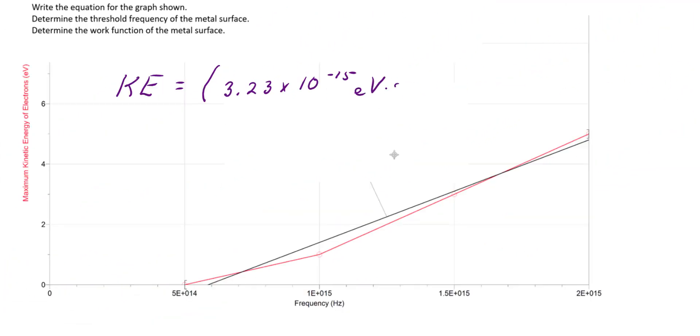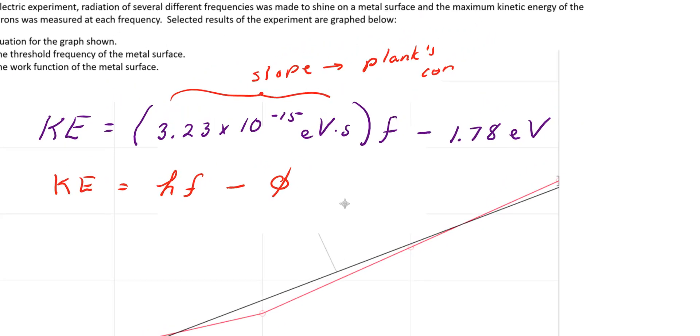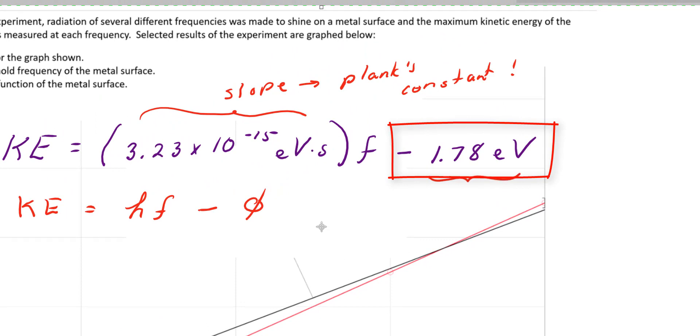Starting with a clean slate, the formula for this particular line for this particular lab is ke equals 3.23 times 10 to the negative 15th electron volts times seconds times the frequency minus 1.78 electron volts. Comparing that to the general photoelectric equation, ke equals hf minus the work function, we see that the slope of our line is indeed h, our Planck's constant. And we can see that the y-intercept b, our negative 1.78 electron volts, that is equal to the work function for that particular metal for that particular lab.